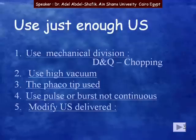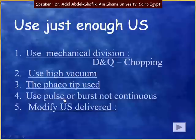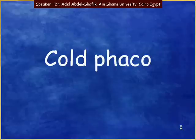In summary, you can reduce the amount of ultrasound by using mechanical methods like division or chopping, by using high vacuum to mechanically remove material, by changing the tip to apply ultrasound more efficiently, by using pulses or bursts instead of continuous mode, or by modifying the ultrasound duty cycle in some of the newer machines.